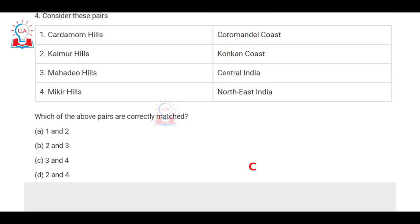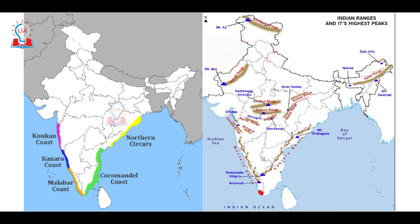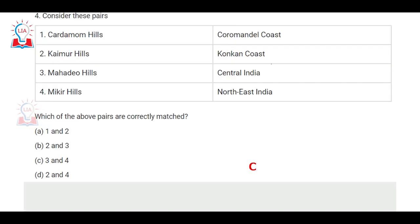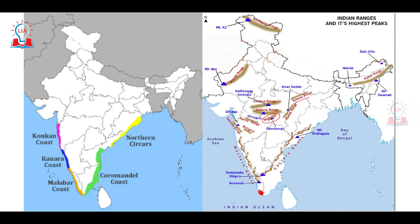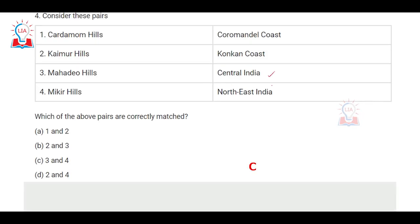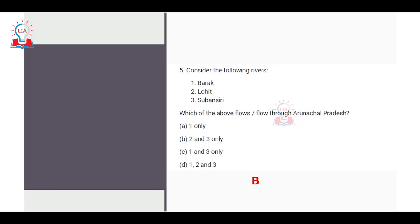The third pair — Mahadei Hills in Central India — is correct. Mahadei Hills are part of the Satpura range, situated in Madhya Pradesh and Maharashtra, and thus are part of Central India. The fourth pair — Mikir Hills in Northeast India — is also correct. Mikir Hills are situated to the east of the Jaintia Hills in Northeast India. So the correct option is C, meaning the third and fourth pairs are correct while the first and second are incorrect.